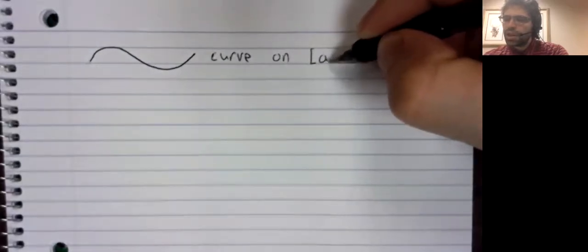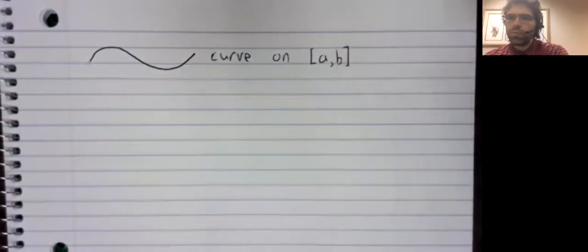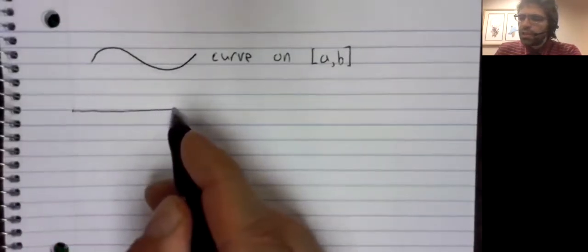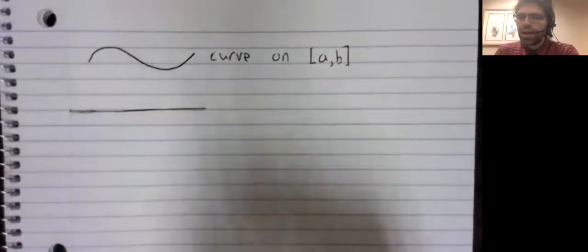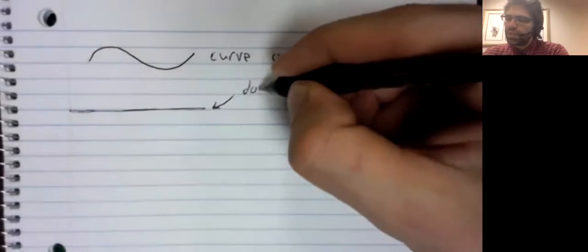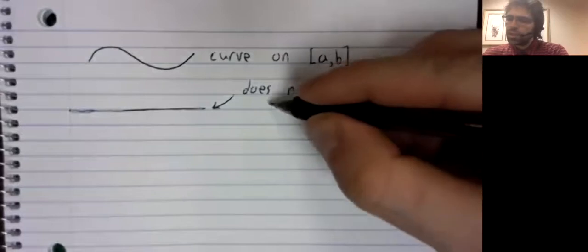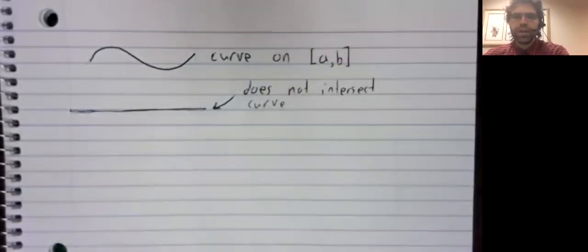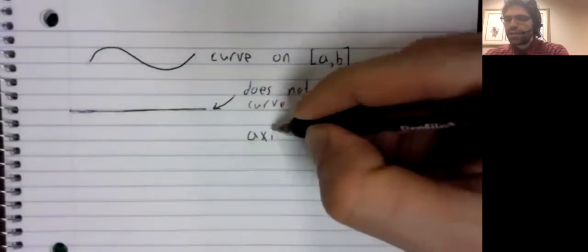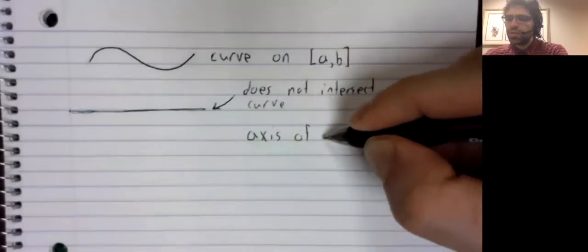Solids of revolution are defined in terms of two things. To start with, we need a curve on a closed interval. And then we need a straight line that does not intersect the curve. And this line is called the axis of revolution.